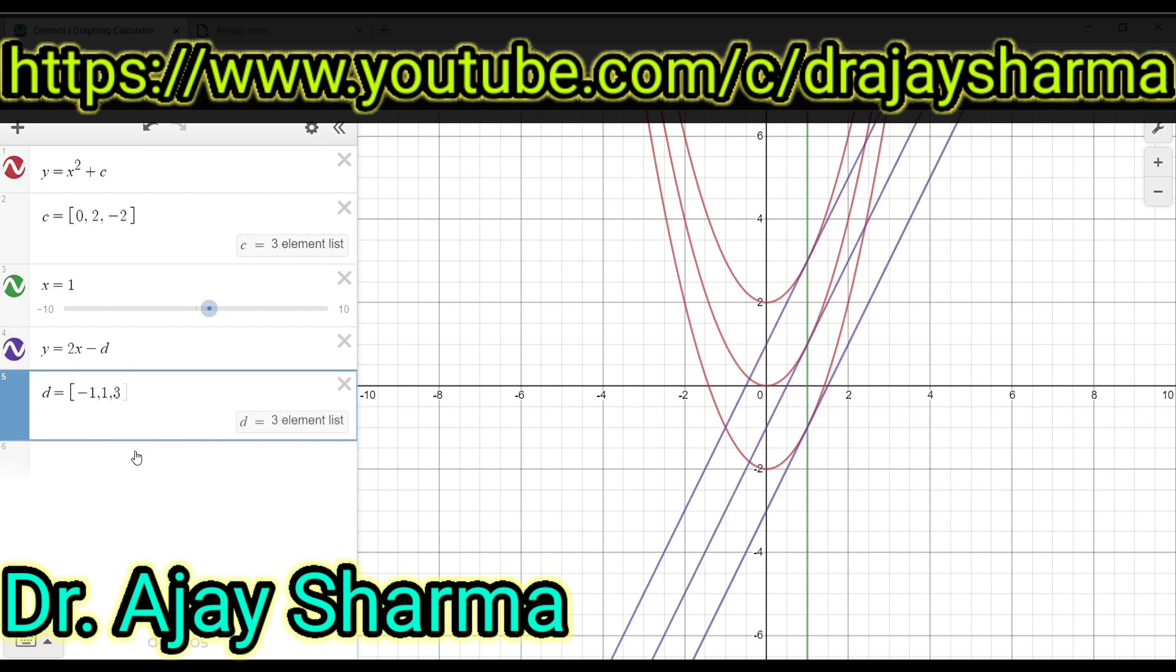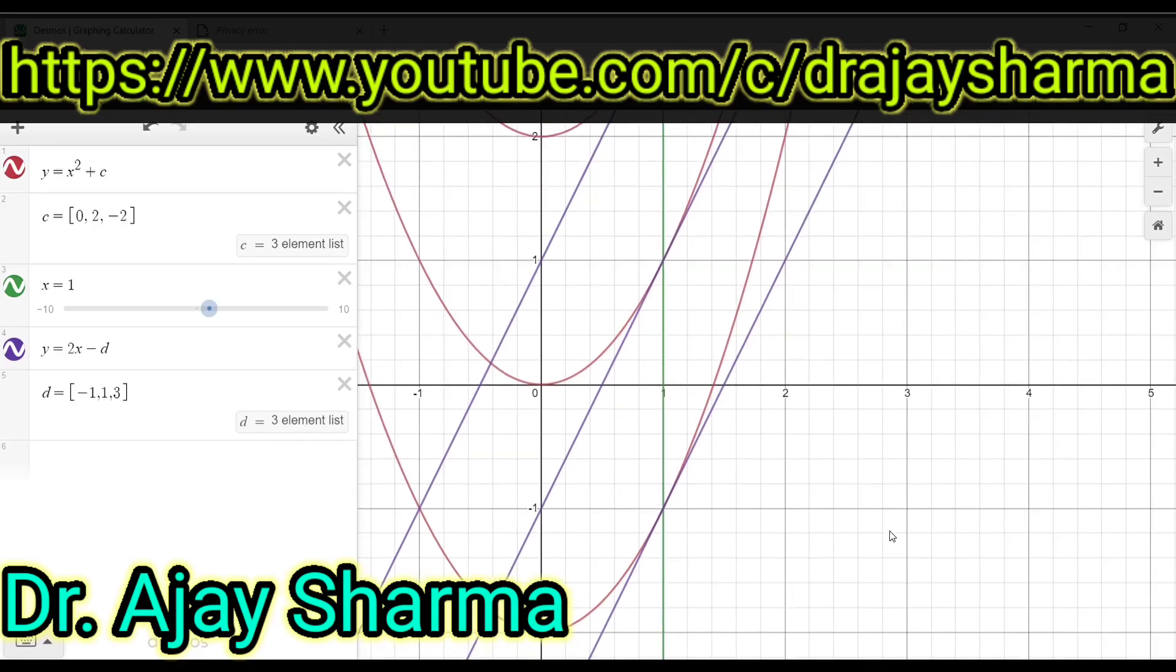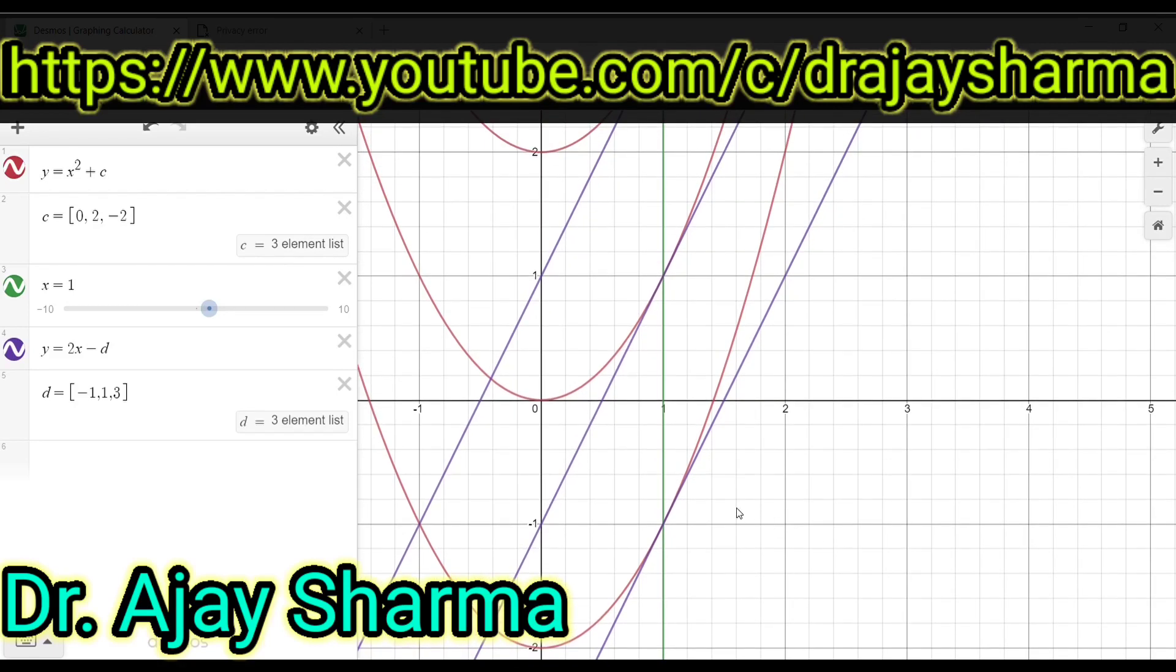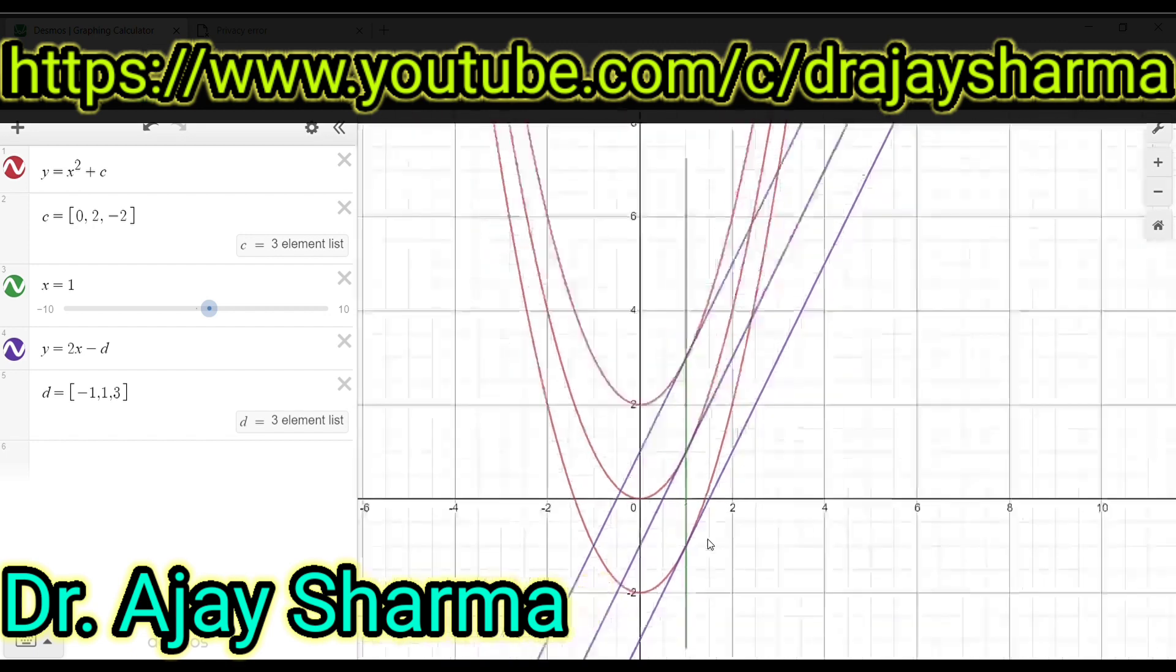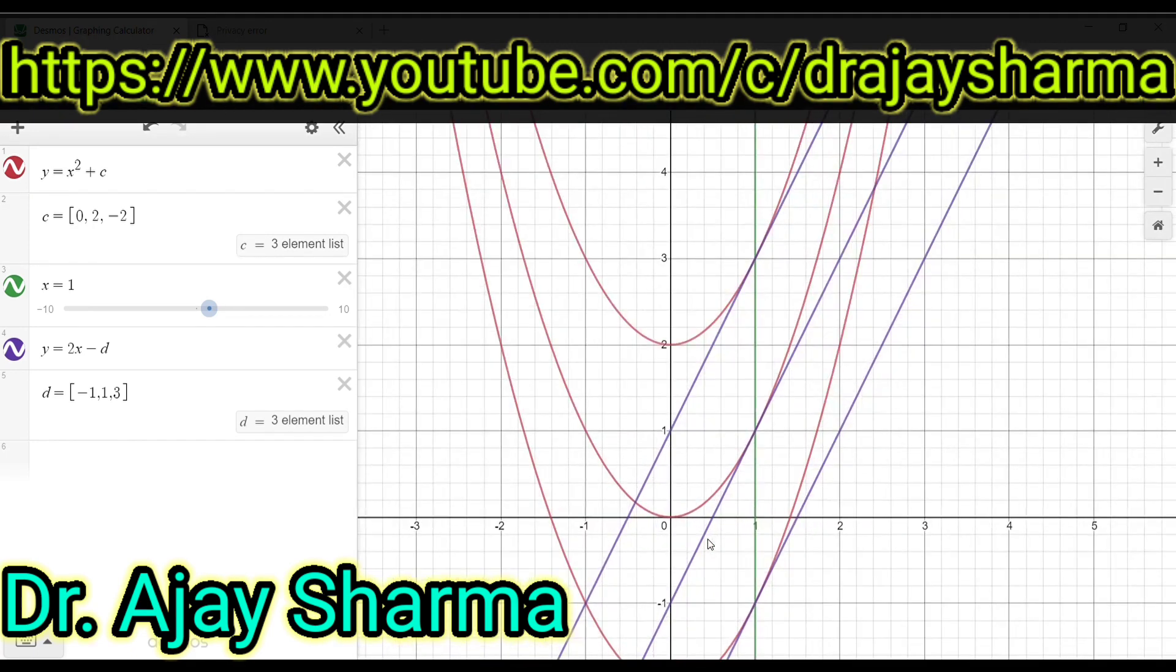So these will be the tangents. We see here clearly that these tangents are at the same point where this particular line x is equal to 1 cuts these curves. Now what is the slope of these lines? Just try to understand, the slope of this line, you can see that these lines are parallel. All these lines are parallel.